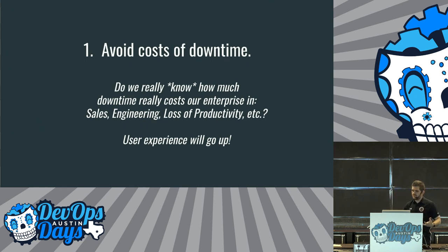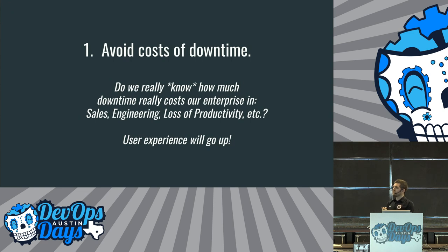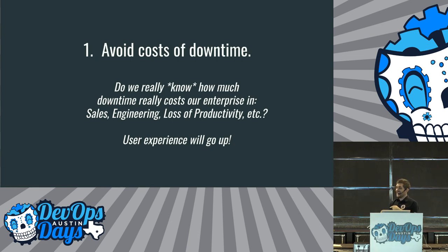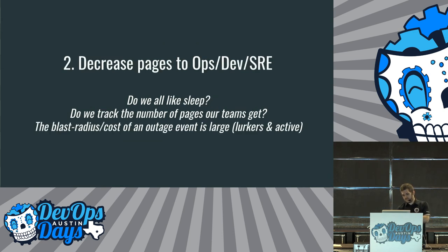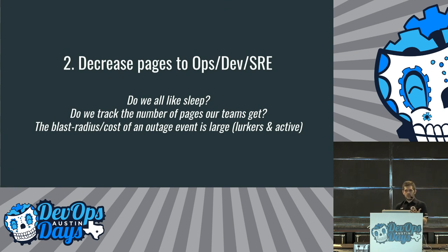Outcomes for chaos engineering — what do we hope to gain by investing time and resources? First, avoid the cost of downtime. Do we really know how much downtime costs our enterprise in sales, engineering, and loss of productivity? How many people have a number — an hour of downtime is this much money? Very few. Go find that answer — you're going to meet a lot of different people in your company, learn cool things, and when leadership sees that number it'll spark interesting conversations about your chaos engineering program. User experience will go up if you don't have downtime. Decrease pages to your SRE, ops, and dev folks — we all like sleep and expected things.